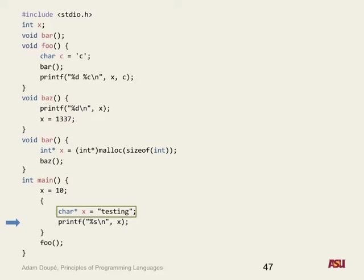That's how you can get into weird problems — if you reuse that constant string 'testing' somewhere else, it may put both references at the same memory location. That wouldn't happen with a constant integer like 1337, because those are immediate values that can just be put right in — they're not addresses.